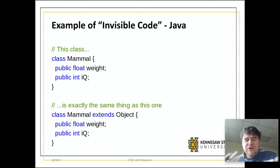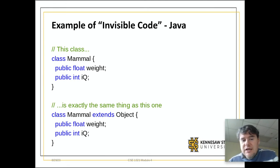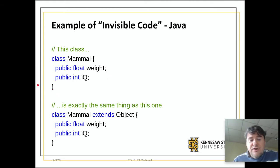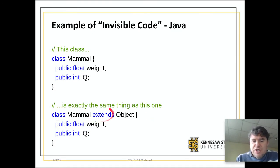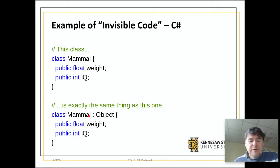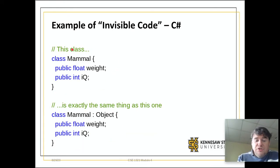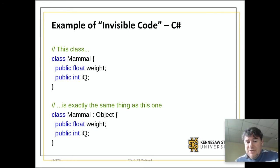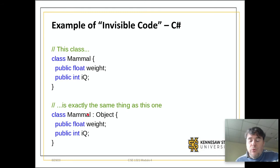We've talked before about invisible code—constructors that are magically there whether you make them or not. Class mammal, as we just did with dog, is inherently the same as class mammal extends object in Java, or with a colon in C#. These two blocks of code are identical. You never have to type colon object—please don't do that. It's unnecessary and confusing because it is always there. We need you to understand it's always there because that's why toString works.